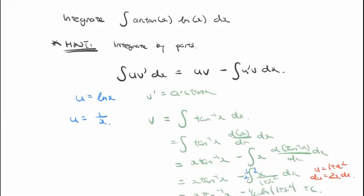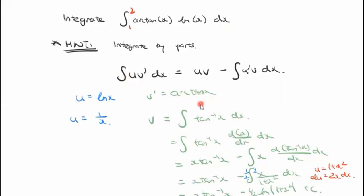You can also try this the other way around with u = arctan(x) and v' = ln(x) — that's very doable as well; either way you'll have to integrate one of them by parts. The original question was actually a definite integral from 1 to 2, but we'll treat it as an indefinite integral and sub in the numbers at the very end using the fundamental theorem of calculus: F(b) minus F(a).